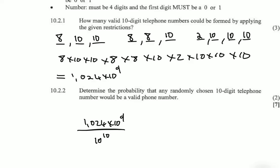So the probability equals 1.024 × 10 to the power of 9 divided by 10 to the power of 10. The sample space is 10 to the power of 10, and 1.024 × 10 to the power of 9 is the count of our event occurring. This simplifies to 64 divided by 625, which equals 0.1024. So that's the probability that if you just pick a 10-digit number, it will be a valid telephone number.